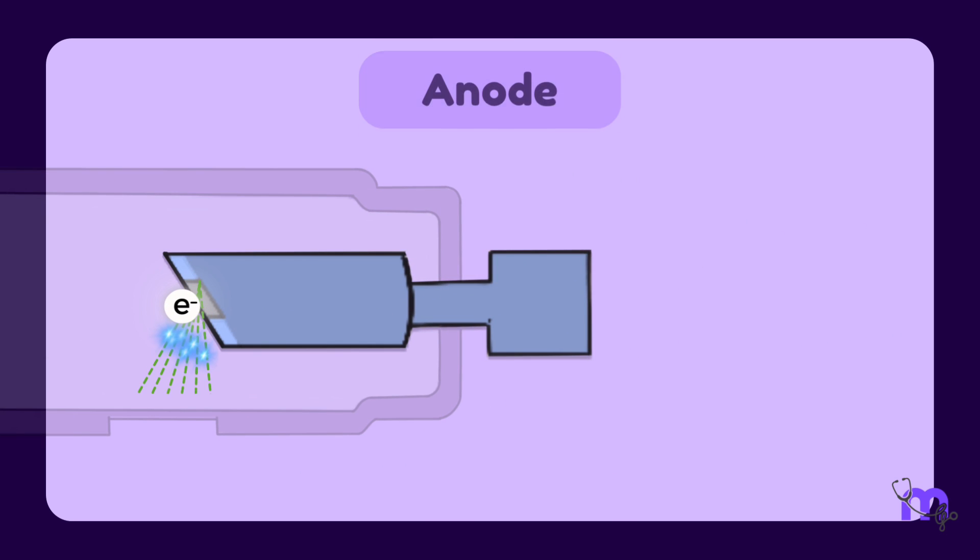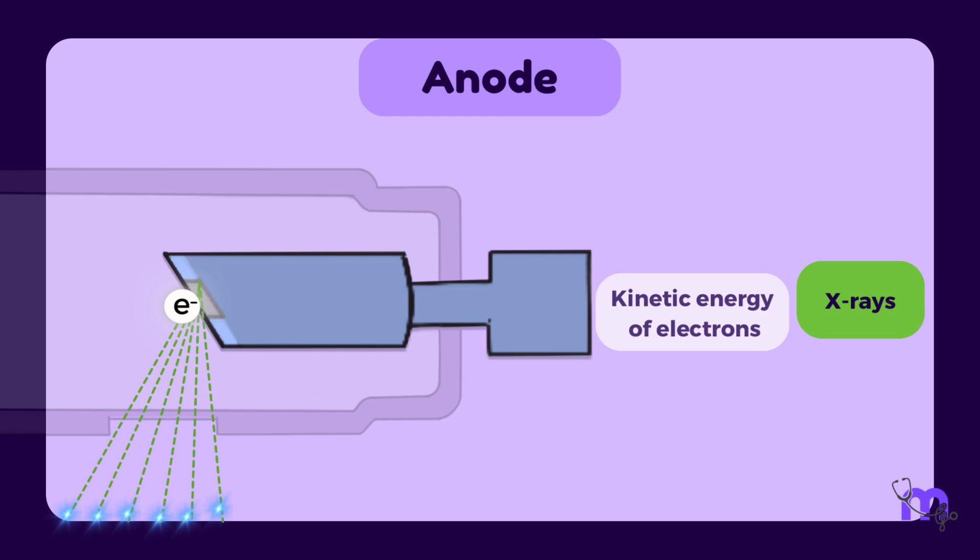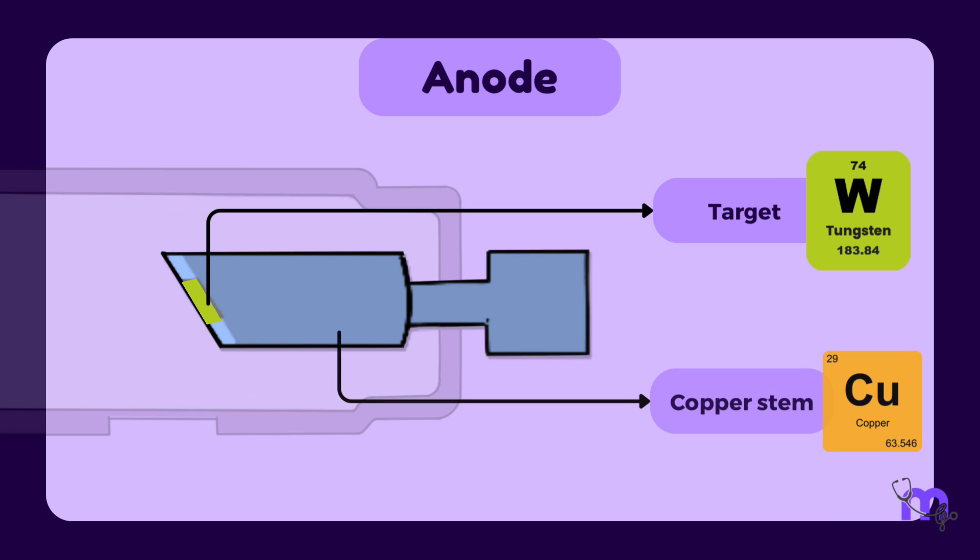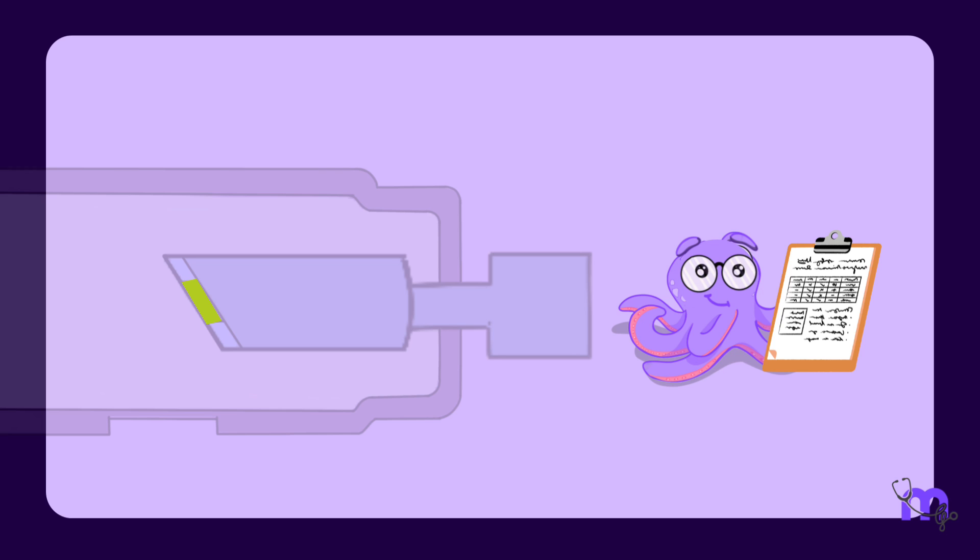Now coming to the anode, we already know that it produces X-rays by converting the kinetic energy of the incoming electrons. It consists of a wafer-thin tungsten plate called the target embedded in a solid copper stem.